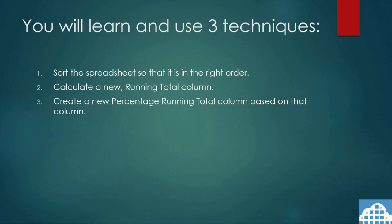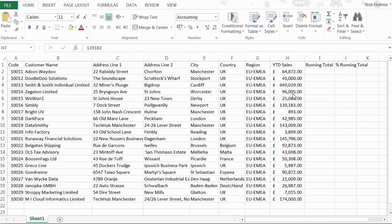You will learn and use three techniques. Firstly, sort the spreadsheet so that it's in the right order. Secondly, create a new running total column, and thirdly, create a new percentage running total column based on that column. Here's our data in Excel 2013 Office 365. This is the column I'm going to sort for task one, this is the column heading for task two, and this is the column heading for task three.